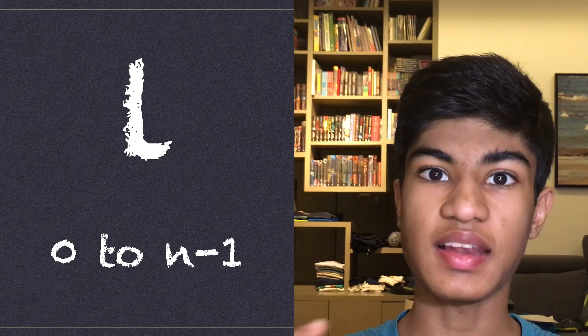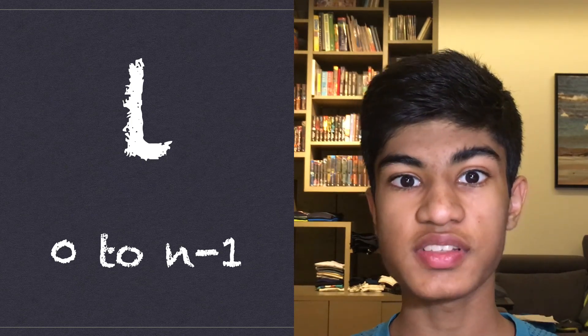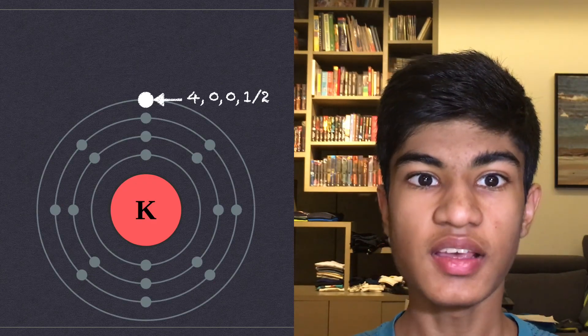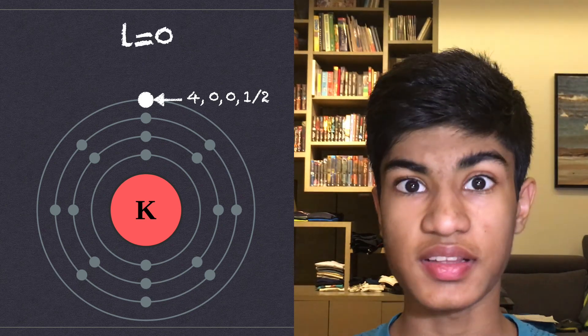A value of zero means the electron is in the S subshell. A value of one means the electron is in the P subshell. Two means the D subshell and three is the F subshell. Since the azimuthal quantum number in this electron is zero, we know that it is an S subshell.